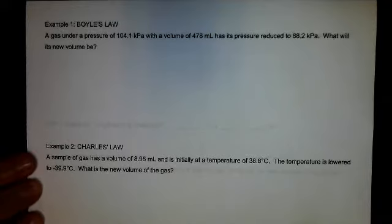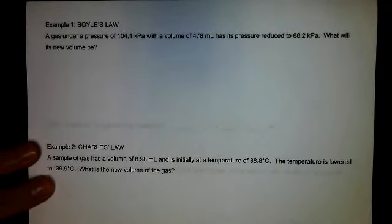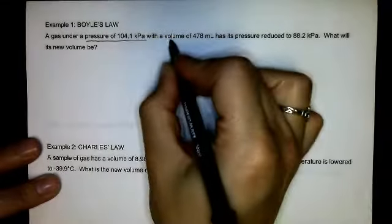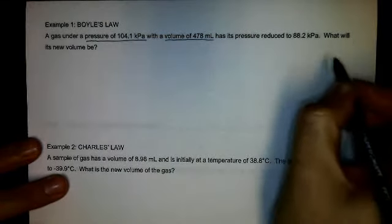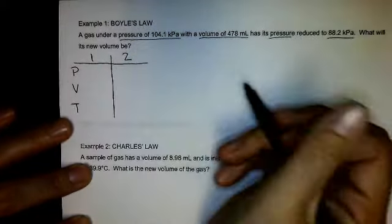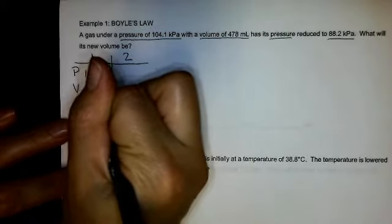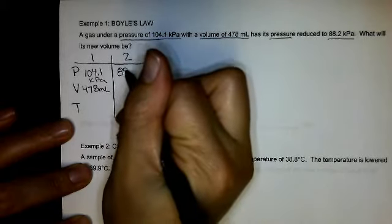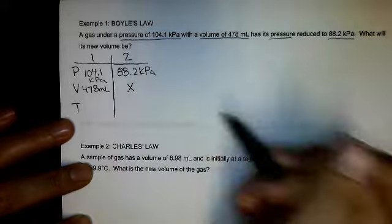Let's do some examples. For our examples, we always want to list our variables first. So we have a pressure of 104.1 kilopascals, and a volume of 478 milliliters, has a pressure reduced to 88.2 kilopascals. So I have my initial conditions and my final conditions. I have pressure and volume, and temperature are my three options. I start with a pressure of 104.1 kilopascals, and a volume of 478 milliliters. And so as its pressure reduced to 88.2 kilopascals, I want to know its new volume.